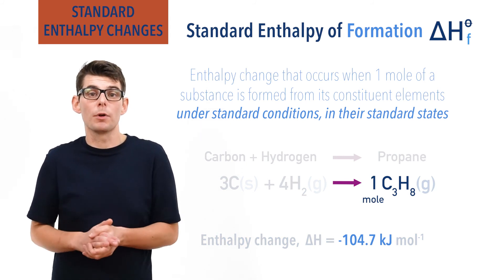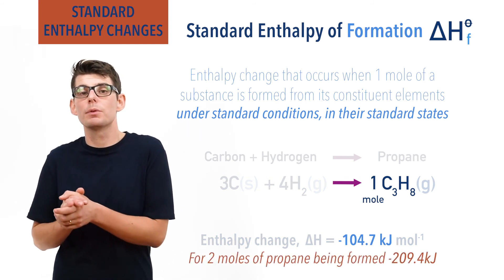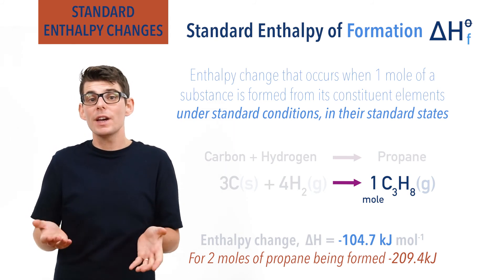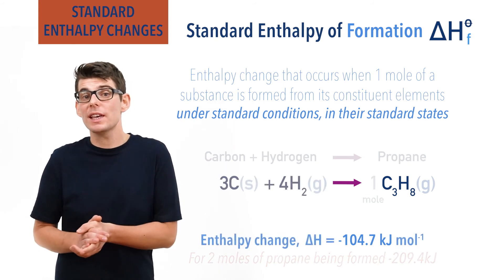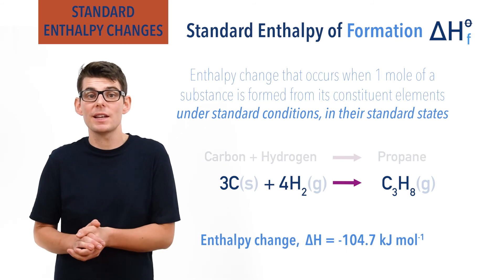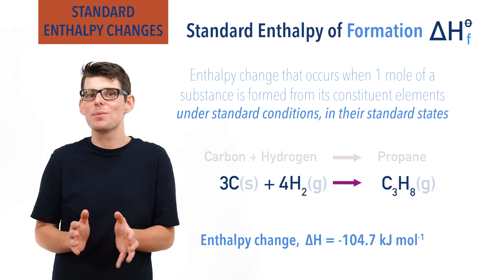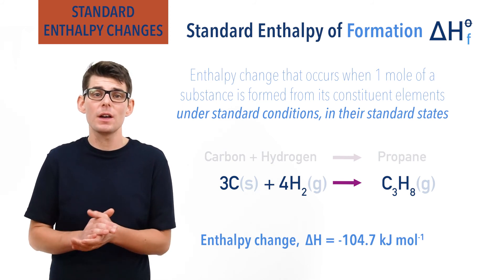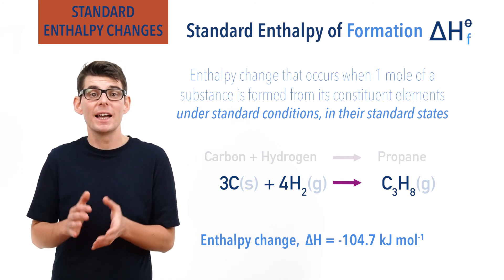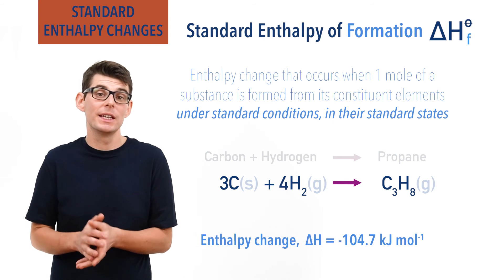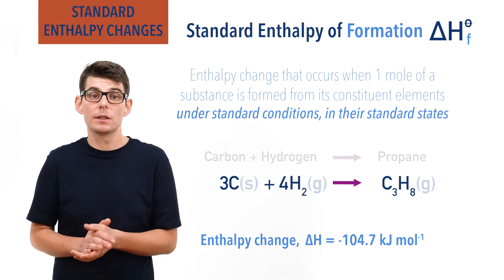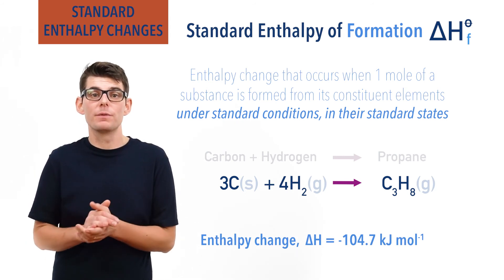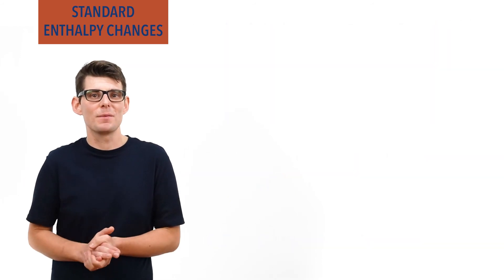If two moles of propane was formed, 209.4 kilojoules of energy would be released. In reality, trying to get carbon and hydrogen together under standard conditions wouldn't really give propane as a product. Enthalpies of formation can be very hard to measure experimentally and are usually found indirectly using Hess cycles. That is a separate topic for enthalpy, but has been covered in a separate video — check the links in the description below.